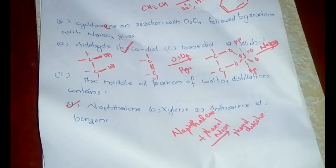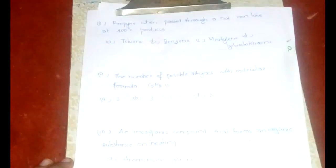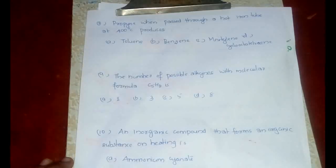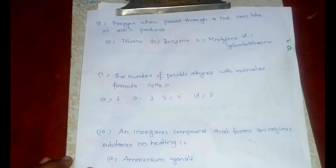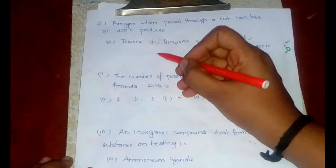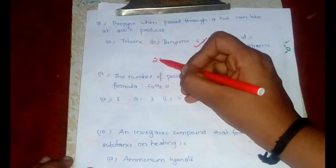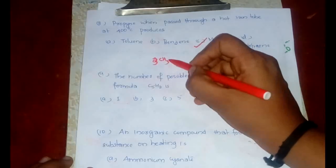Now the eighth question: propyne when passed through a hot iron tube at 400 degrees Celsius produces what? The importance of this question is that you come to know about two things: one about the reaction and the second about the structure of the product that is formed. The answer is mesitylene, option C.